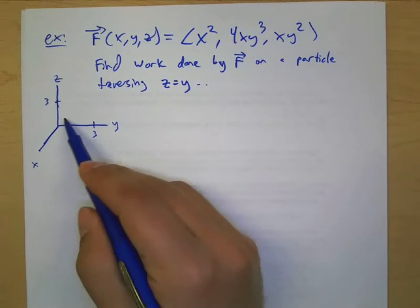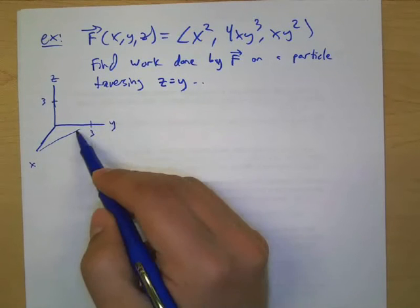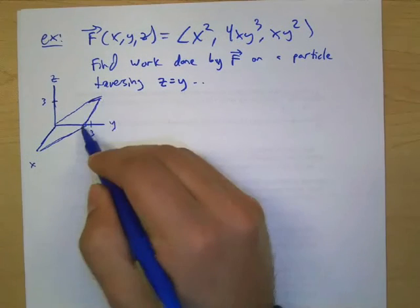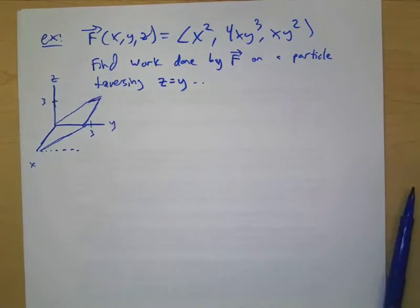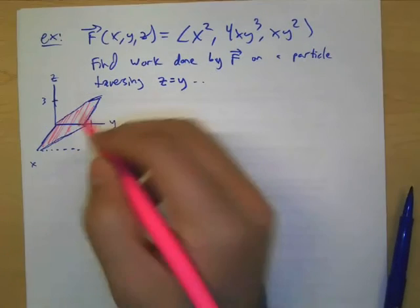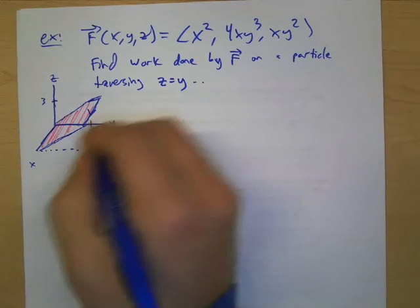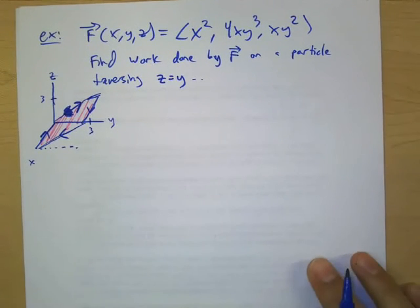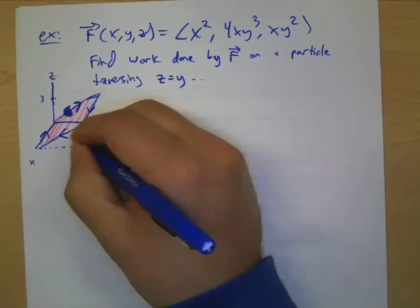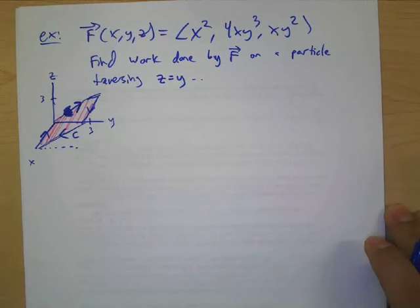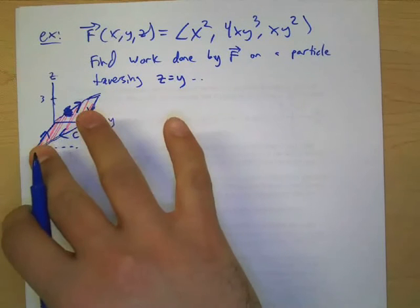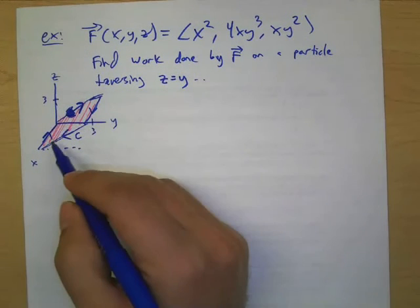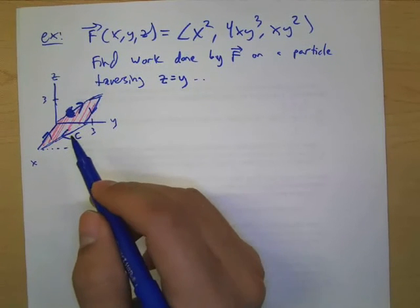So we'll just cut it off at 3, basically. Z equals y is basically the line z equals y, but then we're going to extrude that, right? So we have this plane and here is the direction of motion. So there's our path C.